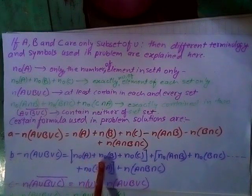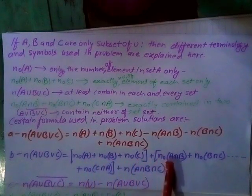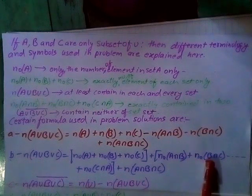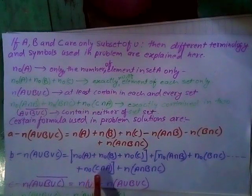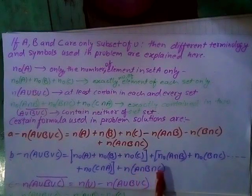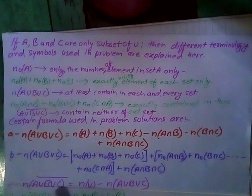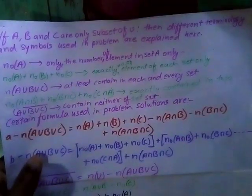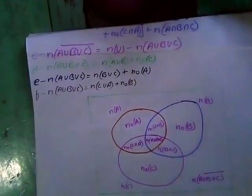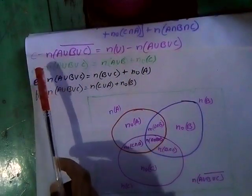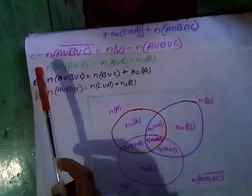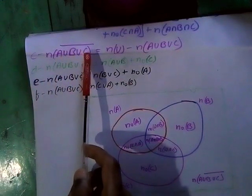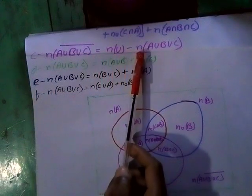N A intersection B intersection C is equal to N not A plus N not B plus N not C plus N not A intersection B plus N not B intersection C plus N not C intersection A plus N not A intersection B intersection C. Also, N A union B union C complement equals N U minus N A union B union C.